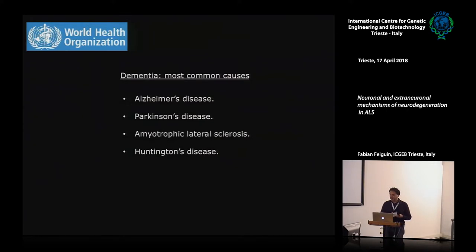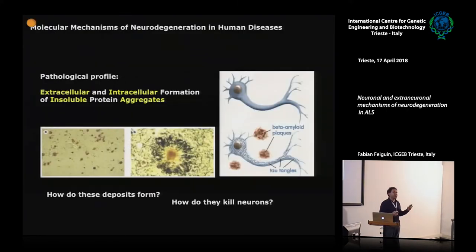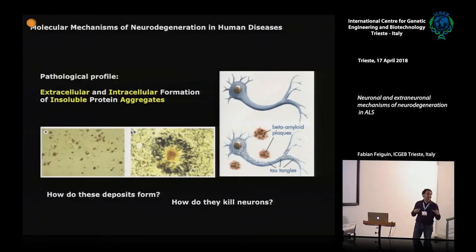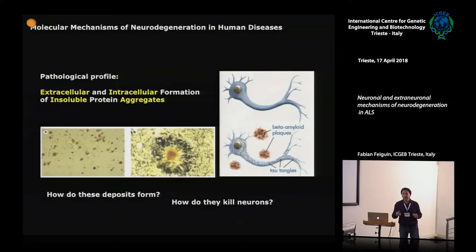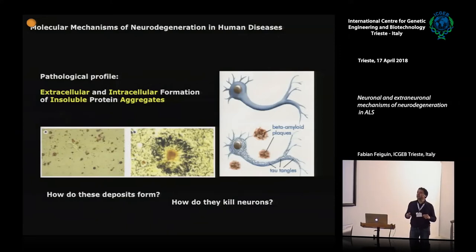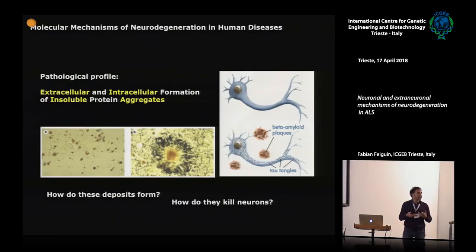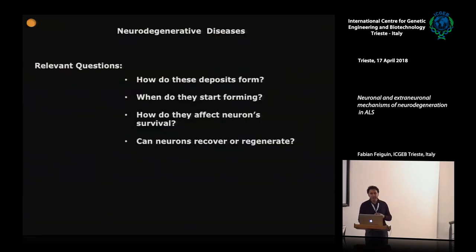These diseases are different, but what they have in common — a common aspect — is the formation of extracellular or intracellular protein aggregates. The main question of the field is to know how these deposits form and, once they form, how do they kill neurons? These are the most relevant issues.